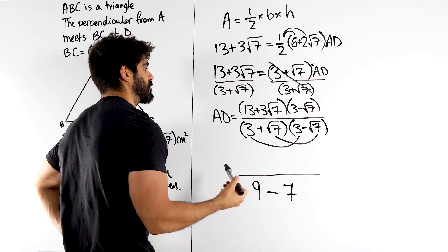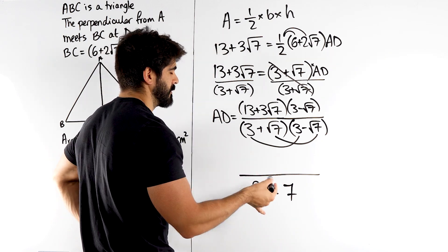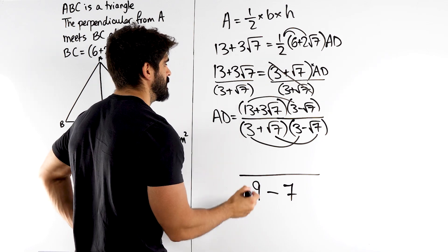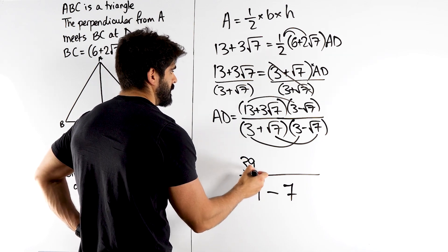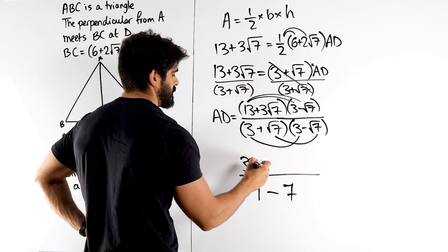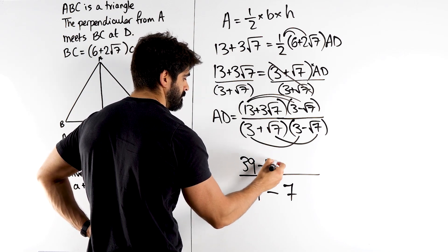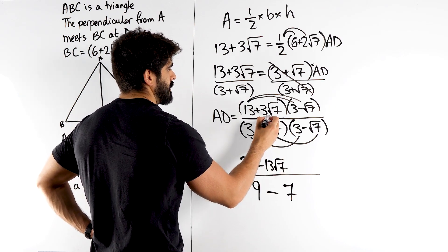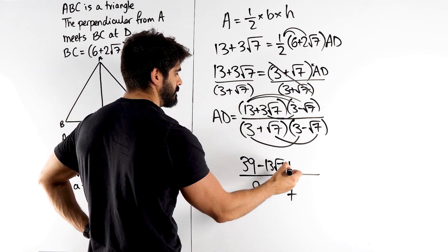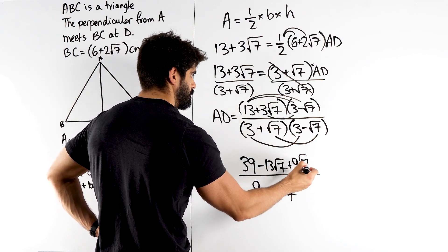Then on the numerator, we're going to have to expand. Obviously, in a calculator paper, you guys can check your answers, but hopefully you don't need a calculator for 13 times 3, 39. Then we have 13 times root 7 is 13 root 7, but don't forget it's a minus. Then we have 3 root 7 times 3. 3 times 3 is 9, root 7.